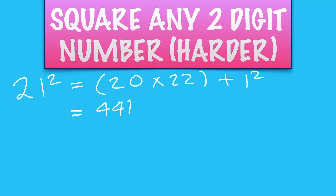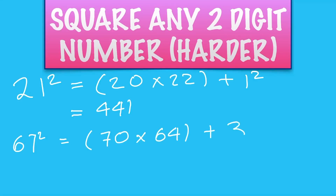Let's try something harder: 67 squared. The nearest 10 is 70. We're up by 3, so go down by 3 to 64, and add the difference squared, that's 3 squared. So 70 times 64: 70 times 60 is 4200, 70 times 4 is 280, so 4200 plus 280 makes 4480, plus 3 squared is 4489.